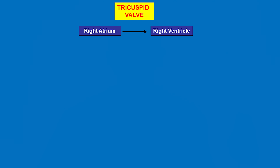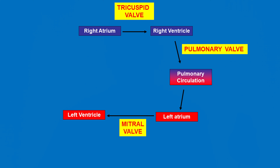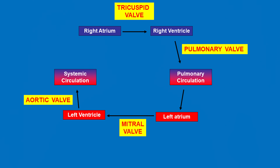Deoxygenated blood is received into the right atrium from the upper and lower parts of the body through the superior and inferior vena cava. It is then pumped to the right ventricle through the tricuspid valve. The right ventricle is the main pumping chamber on the right side of the heart, and it then pumps blood to the lungs to be oxygenated through the pulmonary valve. After the blood is oxygenated in the lungs, it is returned to the left atrium through the pulmonary veins. The left atrium then moves the blood to the main pumping chamber of the heart — the left ventricle — through the mitral valve. The left ventricle then pumps the oxygenated blood to the aorta, to be delivered to the different organs of the body, through the aortic valve.